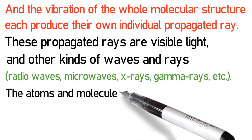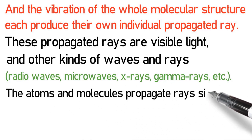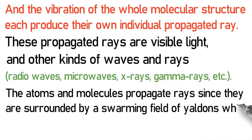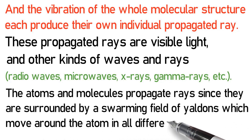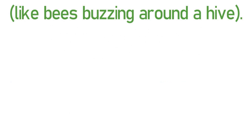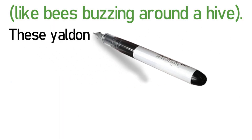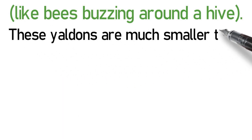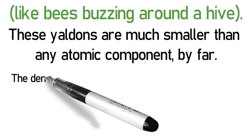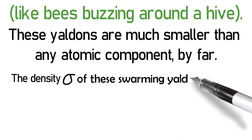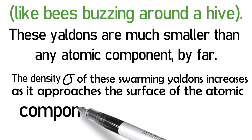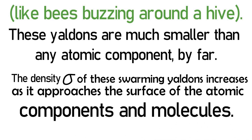The atoms and molecules propagate rays since they are surrounded by a swarming field of Yaldins which move around the atom in all different directions, like bees buzzing around a hive. These Yaldins are much smaller than any atomic component by far. The density, sigma, of these swarming Yaldins increases as it approaches the surface of the atomic components and molecules.